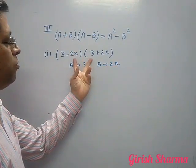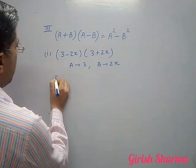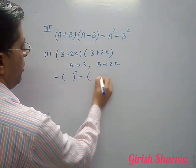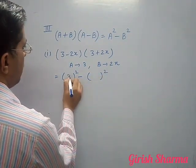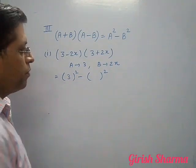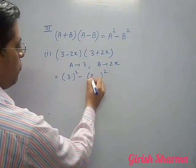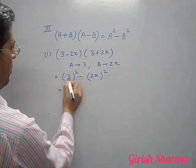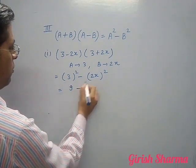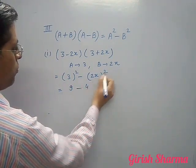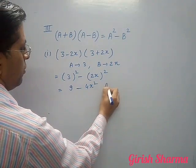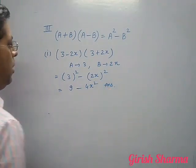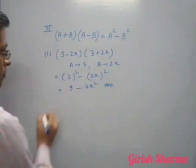A plus B into A minus B is what? A square minus B square. So A is 3 and B is 2x. So what will be? 3 square is 9, 2 square is 4, there is x square. This is your answer.